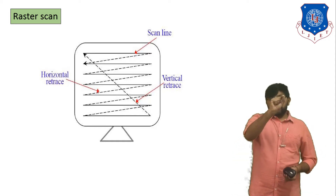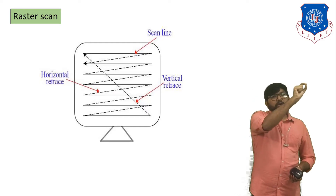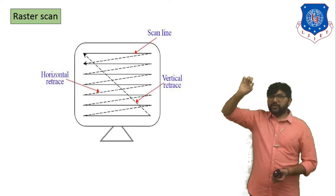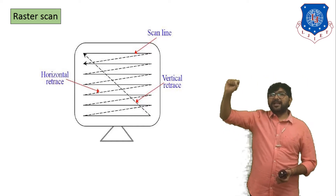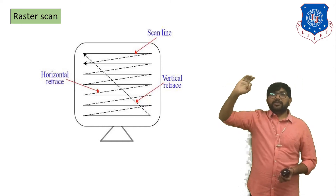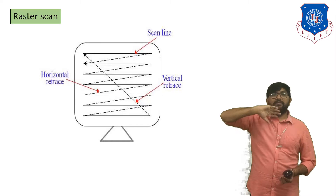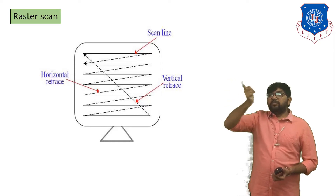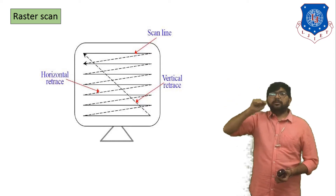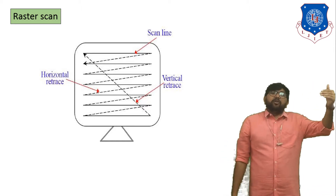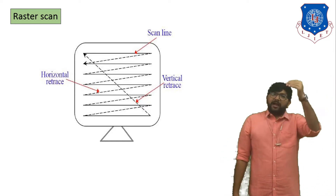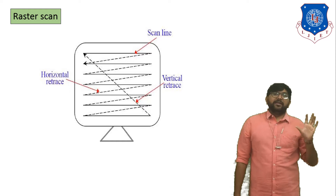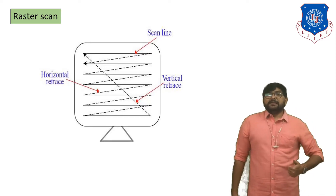In raster scan the electron beam moves row-wise. First, the electron beam moves from the first row, left to right, and scans the first row. Suppose there are 10 pixels in the first row — those with pixel value 0 are not glowing, and those with pixel value 1 are visualized. After the first row the electron beam scans the second row, then the third row, the same way scanning the whole display. Those pixels with value 1 are visualized and finally we can see our picture. This is raster scan.